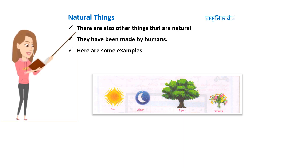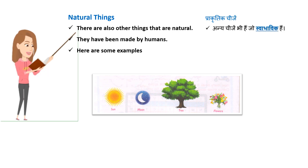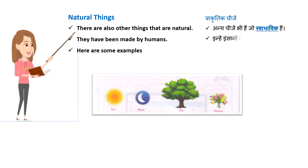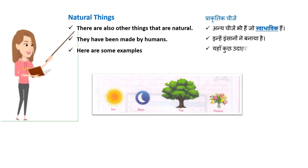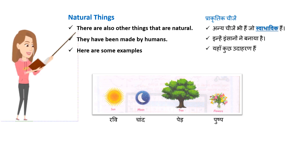Prakritik cheezay. Anya cheezay bhi hain jo swabhavik hain. Yahan kuchh udaaharan hain: sun, moon, tree, flowers.